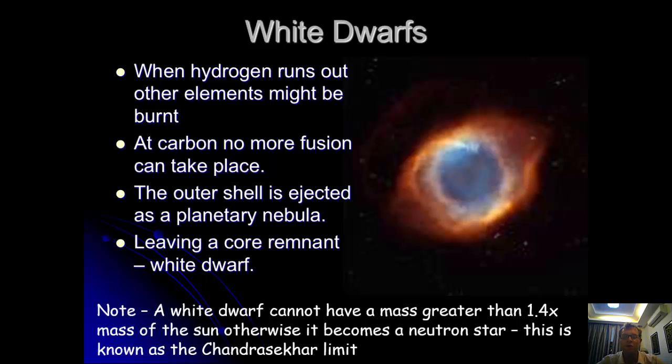The remnant to the core becomes the white dwarf. Note, a white dwarf cannot have a mass that is greater than 1.4 times the mass of the sun, otherwise it becomes a neutron star. And this limit is known as the Chandrasekhar limit. We'll explain what a neutron star is later on. Even a star which has a mass eight times that of our sun, it loses a lot of mass due to ejecting the outer shells, and that core remnant tends to not be very big. I'm going to talk about what a neutron star is in another video as it happens. But just jot down that there is a distinction there.